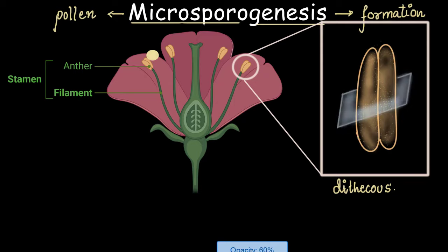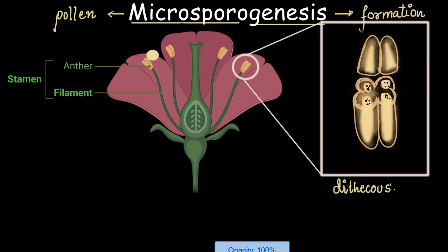Let us have a transverse section of this anther — let's cut it and see what is inside. With a close look into the anther, you can see that it has a long tube-like structure inside, which is also called a sac, inside which the pollens are produced. These black dots that you see are cells which will later become pollens. These sacs are called pollen sacs.